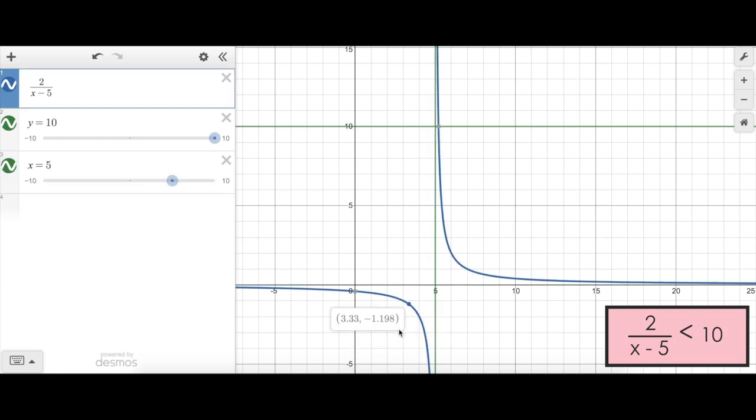And you can see here as I move to the left, my y values are increasing, however they never will reach 10. And that's because I have a horizontal asymptote at 0. So I can say the solution to this inequality problem is all x values less than 5, and all x values greater than 5.2.